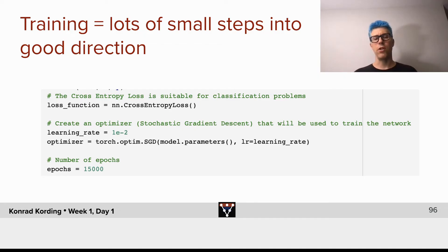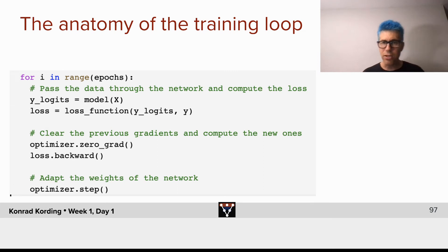And then we want to train it for a certain period of time, 15,000 epochs. Now, here's the anatomy of the training loop, and this will generally look the same across a lot of neural networks. We will go through all the epochs. This is what the for loop is about.